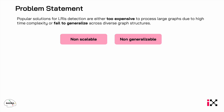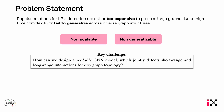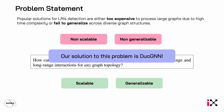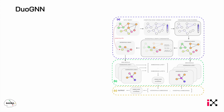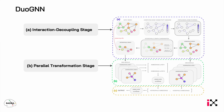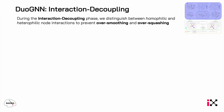Our goal is to design a scalable and generalizable solution to capture short and long-range interactions in any graph. Our solution is DuoGNN, which I will now present. This is the architecture and pipeline of DuoGNN, which is composed of an interaction decoupling stage, a parallel transformation stage, and a prediction stage. The core idea behind DuoGNN is to implement a dual pipeline which can learn short and long-range interactions in parallel.